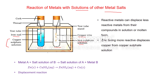This is a displacement reaction. A more reactive metal A displaces a less reactive metal B from its salt solution. For example, zinc displaces copper from copper sulfate solution: Zn + CuSO₄ → ZnSO₄ + Cu. Reactive metals can dissolve less reactive metals from their compounds in solution or in molten form.